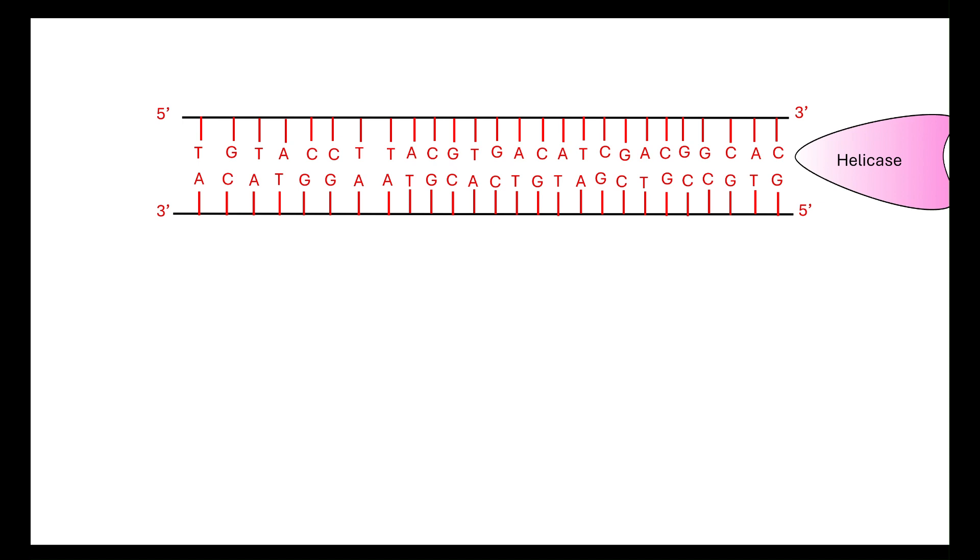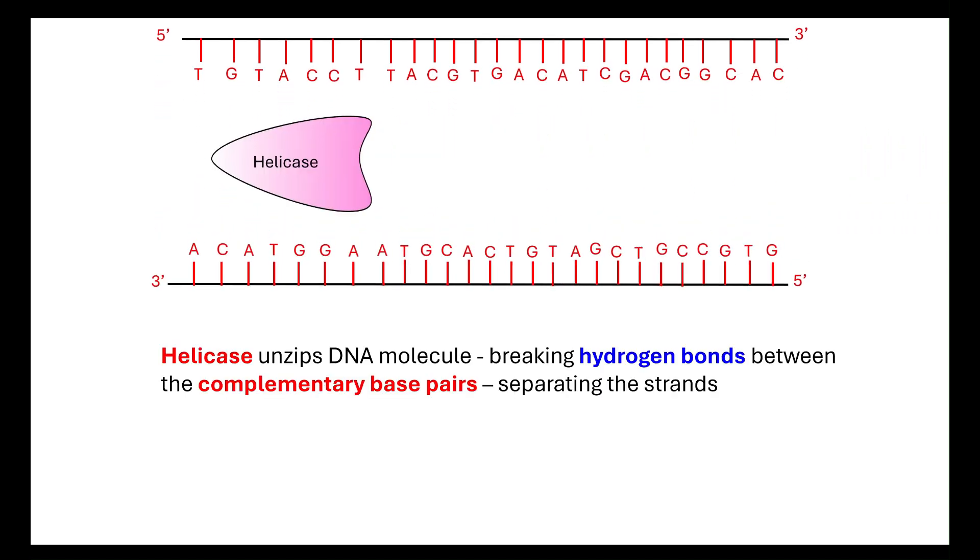We know that we've got a double helix of DNA and we know that our nitrogenous bases are held together with hydrogen bonds. The first enzyme we need to discuss is helicase. Helicase is the enzyme that is needed to unzip the DNA molecule, and what that means is it's going to break the hydrogen bonds between those complementary base pairs.